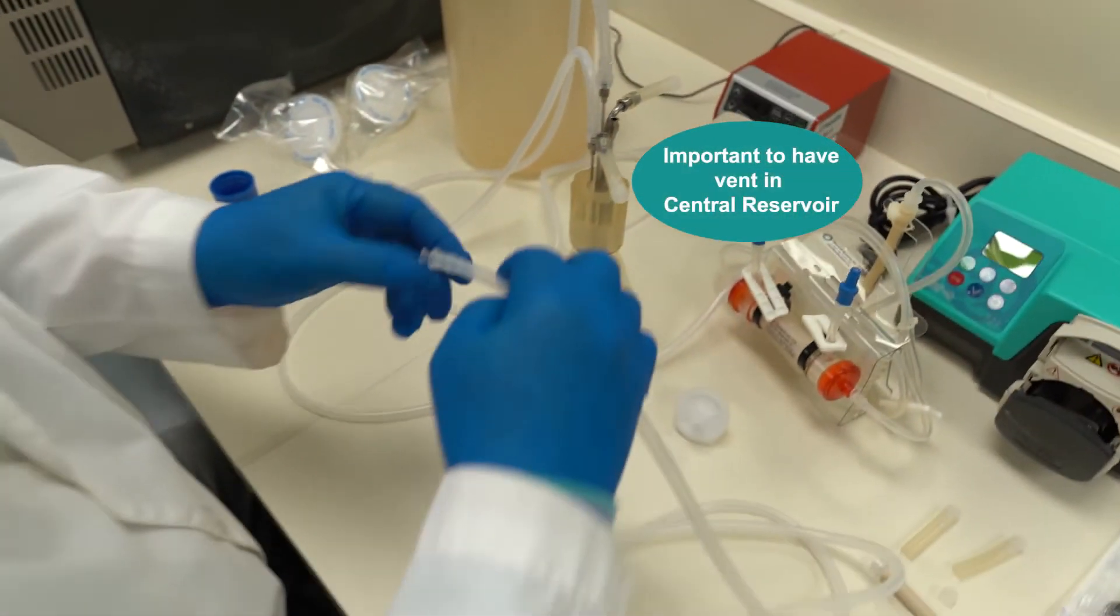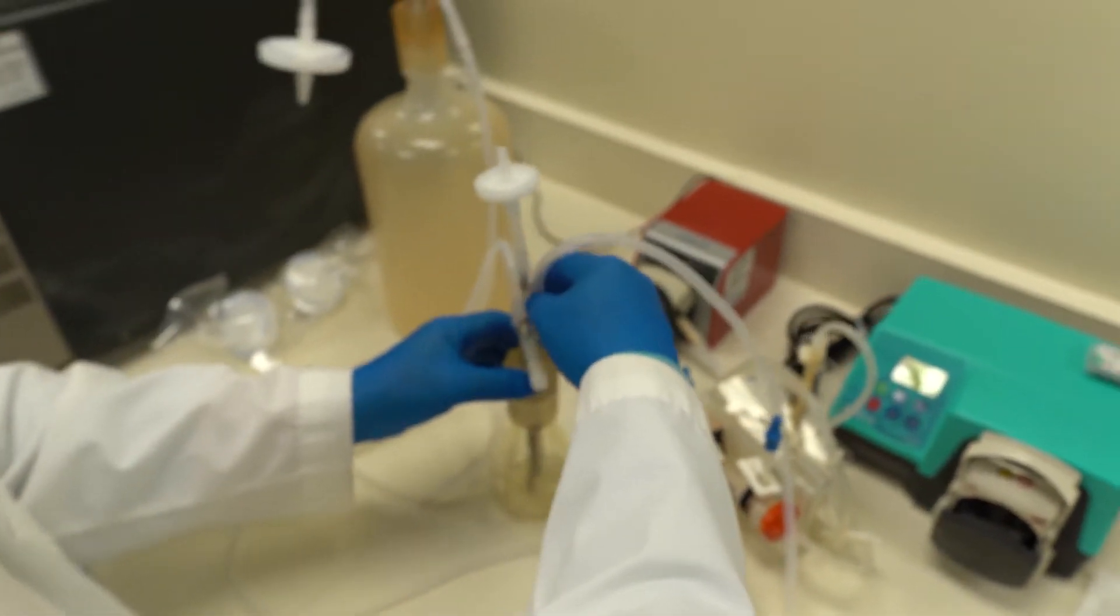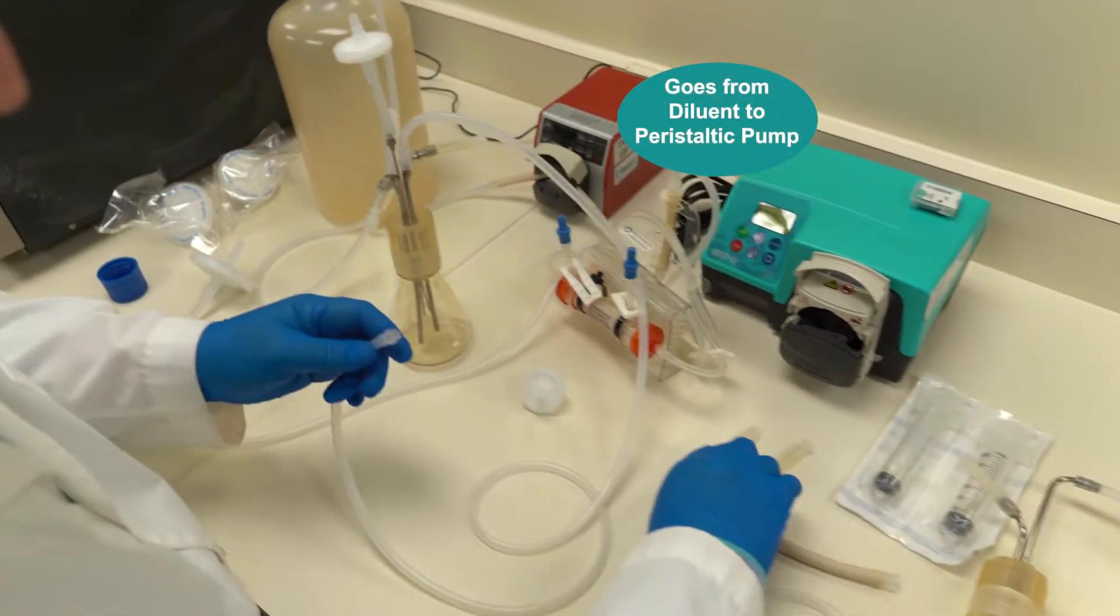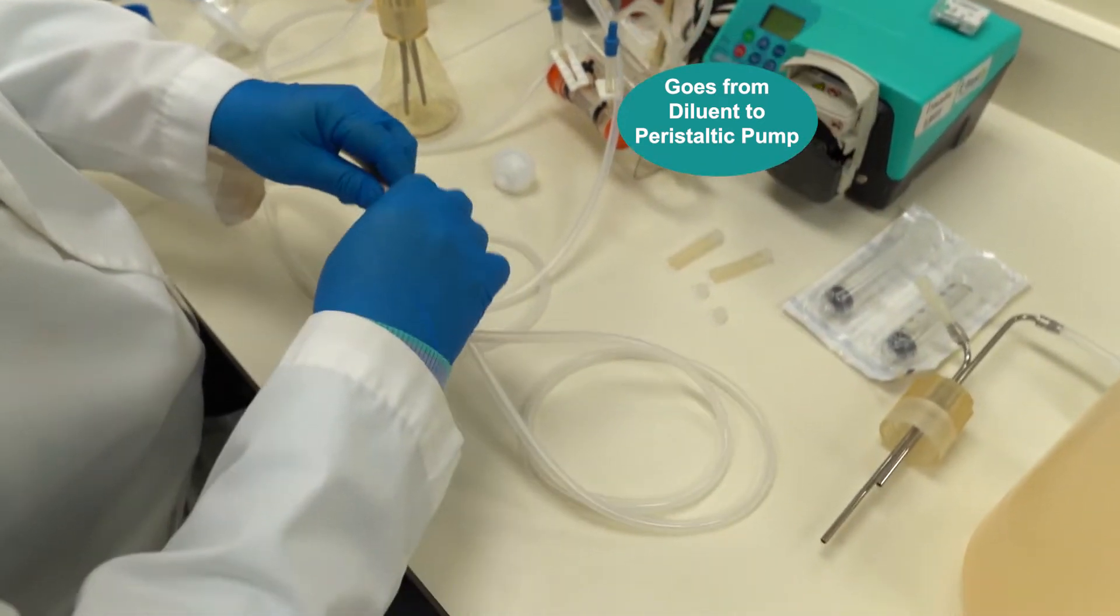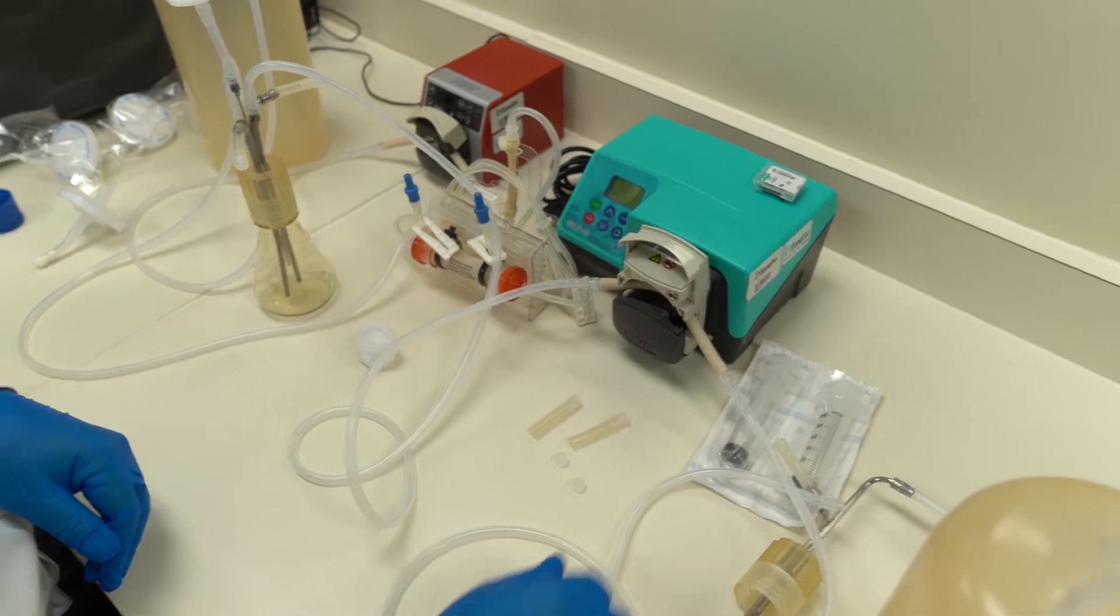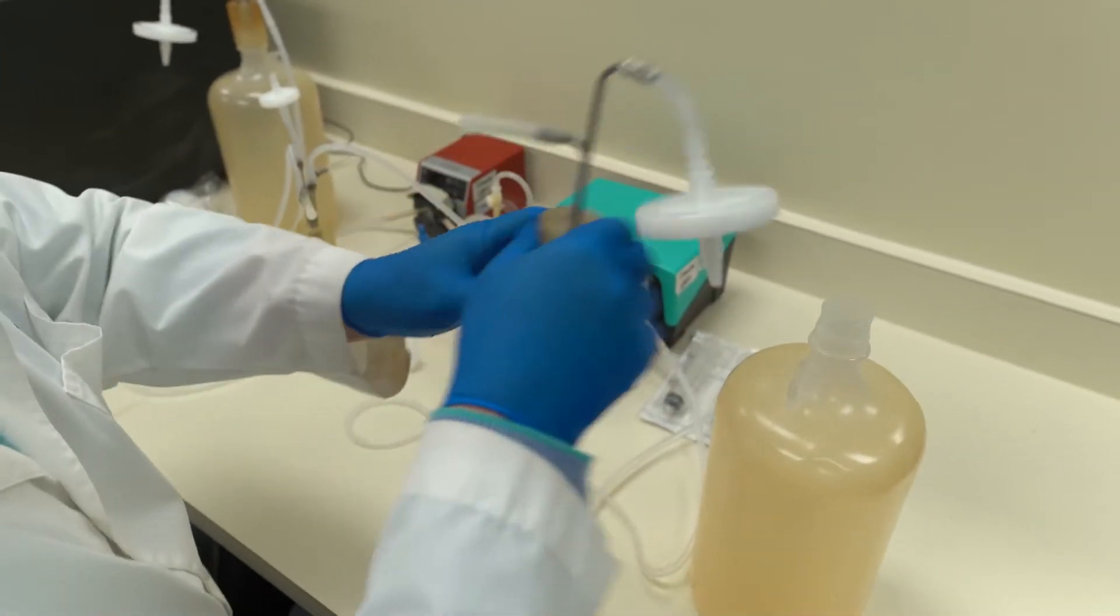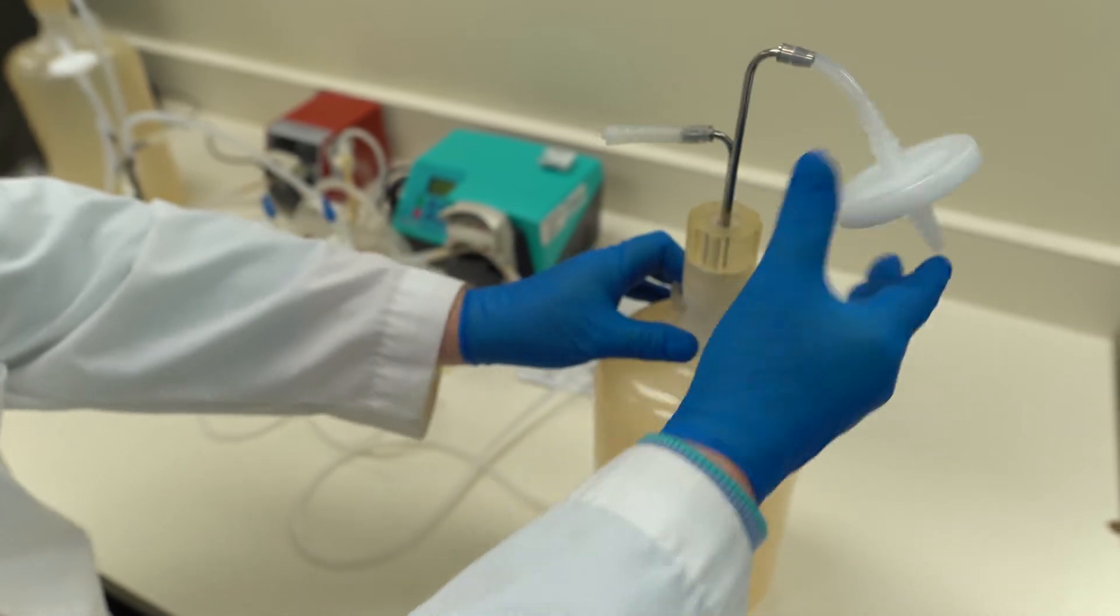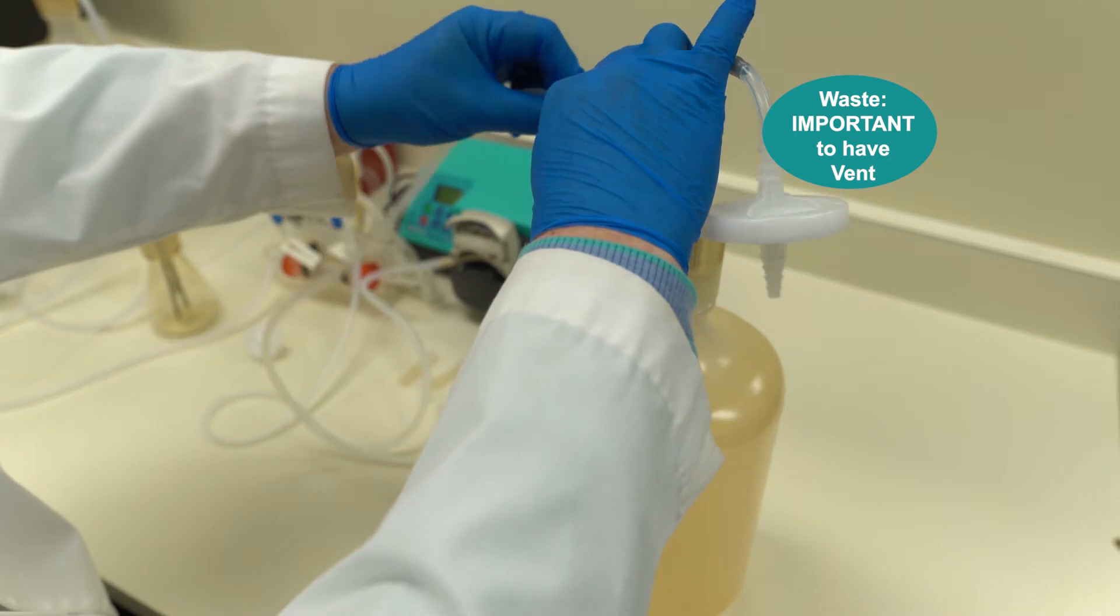Now from here we're going to go to our diluent. Diluent out. Through the peristaltic pump. This is pump tubing. I can just go into the peristaltic pump like that. And then here this is for our waste. So it's not so important that we have tubing to go to the bottom but it is still super important to have a vent.